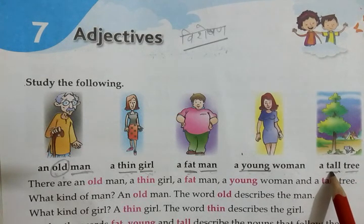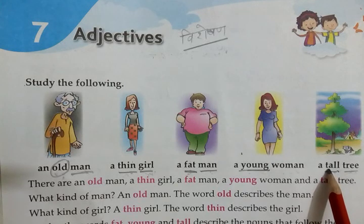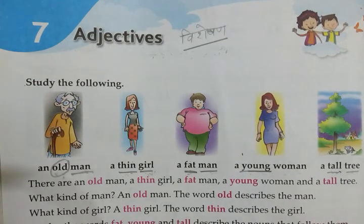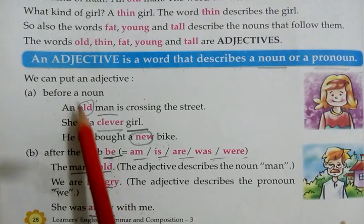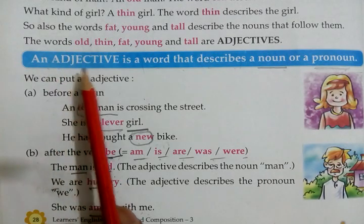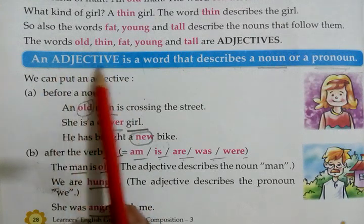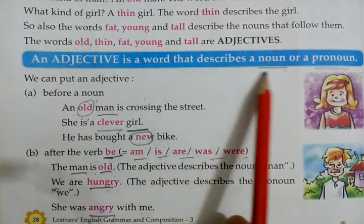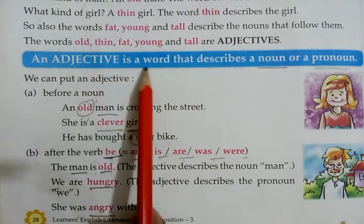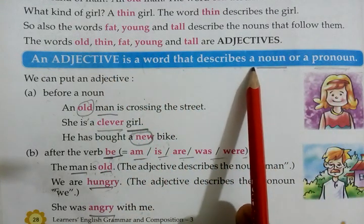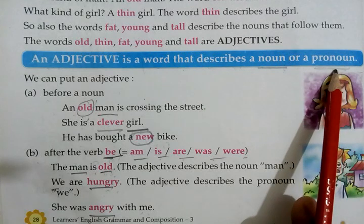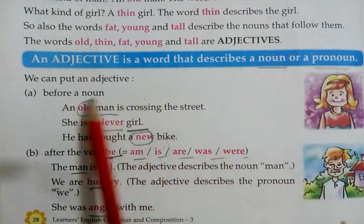Jab kisi bhi noun ki visheshta bata te hain, jo sabd use hum adjective kehte hain. What is an adjective? An adjective is a word that describes a noun or a pronoun. Ek adjective wo sabd hota hai jo batata hai noun or pronoun ke baare mein.